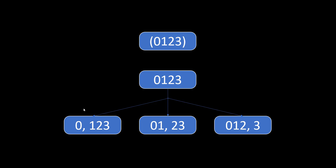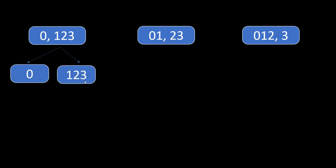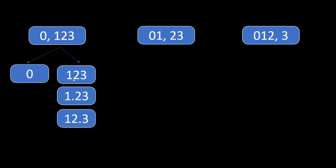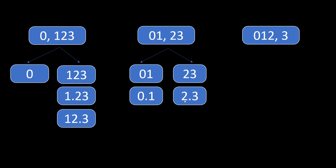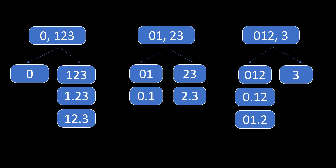For all those comma-split coordinates we also need to consider the dot. In the first split we have 0 and 123: 0 stays as 0, but 123 can become 1.23 or 12.3. In the second split with 01 and 23, we similarly apply the dot — noting that there must always be a digit on both sides of a dot. Doing the same with the third split (012, 3) we get all further breakdowns.